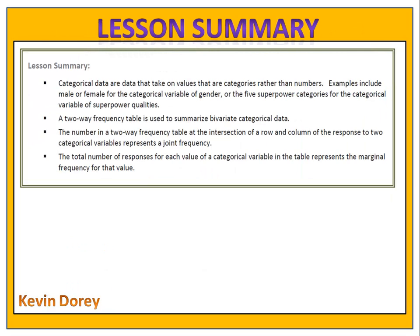We now know that there are two types of data: categorical and numerical. We know that if we have bivariate data — meaning two pieces of information — we can use a two-way frequency table. A two-way frequency table has the marginal frequencies on the outside in the total column and total row, and the numbers within the rows and columns themselves are known as the joint frequencies.